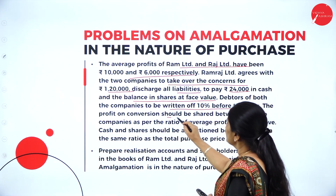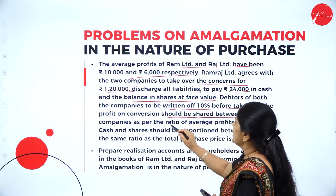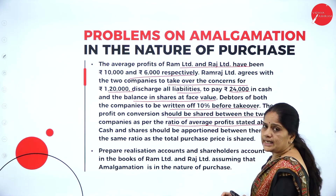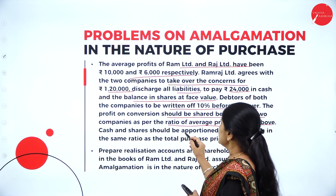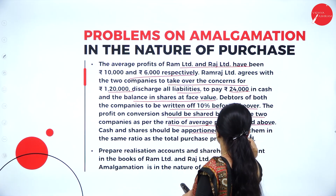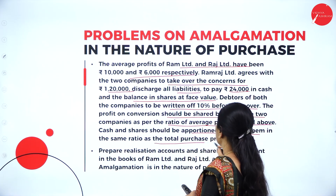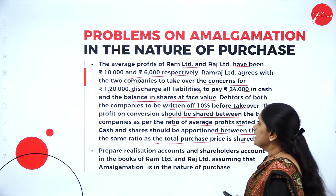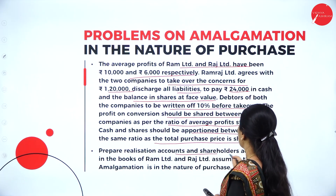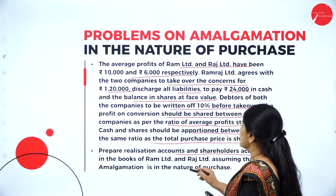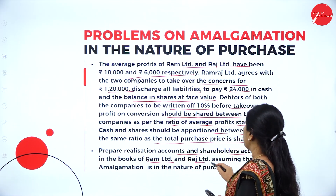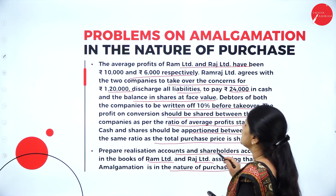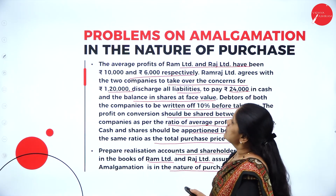The profit on conversion should be shared between the two companies as per the ratio of average profit stated above. Cash and shares should be apportioned between them in the same ratio as the total purchase price is shared. Prepare realization accounts and shareholders account in the books of Ram Limited and Raj Limited, assuming that amalgamation is in the nature of purchase.